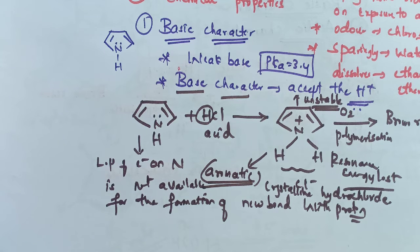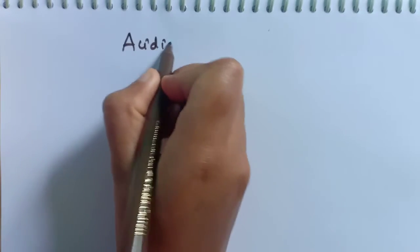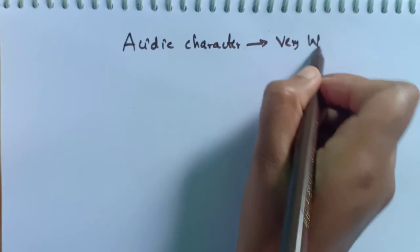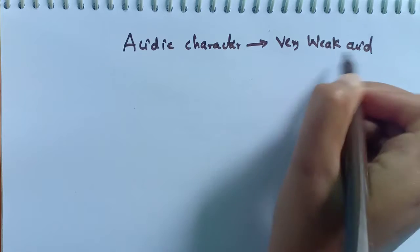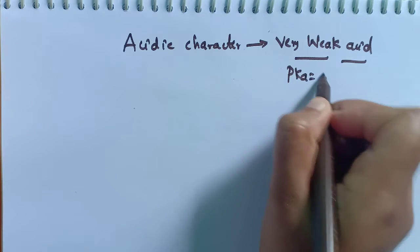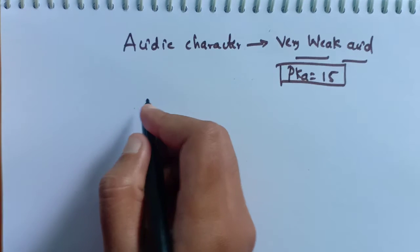I hope you have understood the basic character of pyrrole. Now let's study the acidic character of pyrrole. Pyrrole is a very weak acid as well as a weak base. It has a pKa value of 15. Its acidic character is shown by its reaction with solid potassium hydroxide (KOH) and also with Grignard reagents, which have the general formula RMgX.